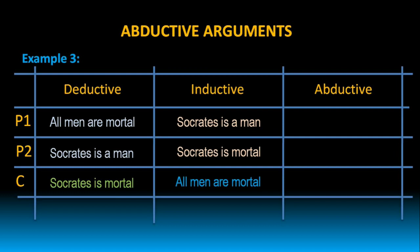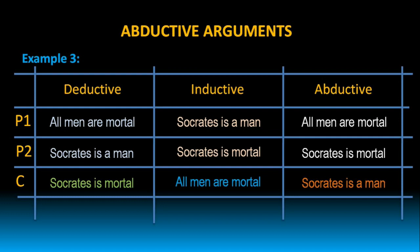Now let us look at abductive arguments. All men are mortal. Socrates is mortal. Therefore, Socrates is a man. When we look at this abductive argument, the conclusion cannot be logically inferred from the given two premises. That is why in abductive arguments, the conclusion may be true or may not be true — there is no guarantee. But when we look at the reasoning process, it just takes into consideration the available information. Based on premise 1 — all men are mortal — and premise 2 — Socrates is mortal — it gave the best prediction that Socrates is a man.